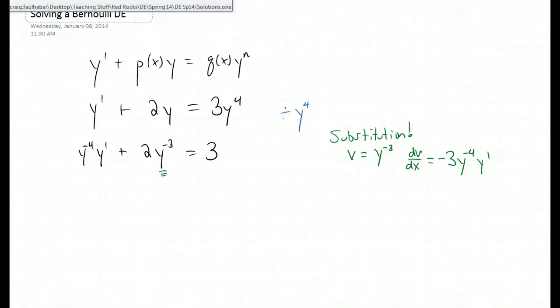Now here's what's cool about this substitution. We obviously have y to the negative third power is v, and that's going to go in right here. But now we also have this y to the negative fourth y prime, which appears right here. So it might make sense to isolate this just by dividing by negative 3. We have negative one third dv dx equals y to the negative fourth y prime. And now we can easily make the substitution. y to the negative fourth y prime is just going to turn into negative one third dv dx plus the 2 is going to follow. y to the negative third power is now v equals 3.